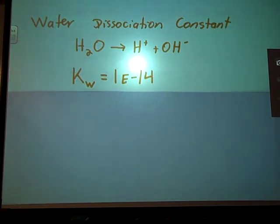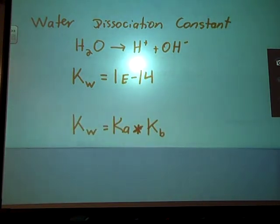So let's think about Ks for a second. K is products over reactants. So since I have a small number here, that must mean that my reactant, my denominator, is much larger than my product, my numerator. So that means that water doesn't do this very much. And again, that should make sense.